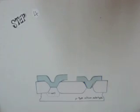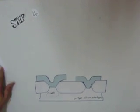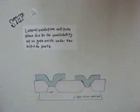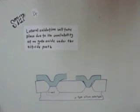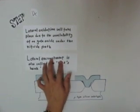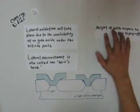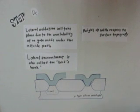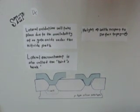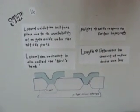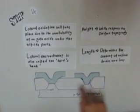Step 4. From the continuation of step 3 processes, we will have what we call the bird's beak on the P-type substrate. Bird's beak will happen because lateral oxidation will take place due to the availability of pad oxide under the nitride path. Bird's beak is also what we call lateral encroachment. There are two additional parameters that need to be taken care of. First is the height with respect to the surface topography — in other words, this will determine how smooth the surface on top of the P-type substrate. The length will determine the amount of active device area loss. This region here is what we call the bird's beak.